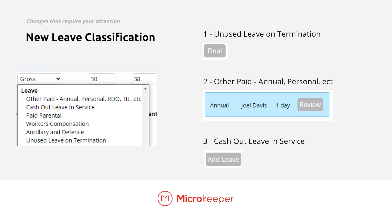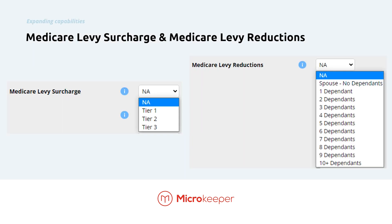However, if they usually get paid 38 hours and they're getting paid out extra hours on top of that, then that's classed as cash out leave in service. The add leave button on the payslip will use cash out, while leave requests will default to other leave. If any of this is incorrect, you can always override it and select the correct option.